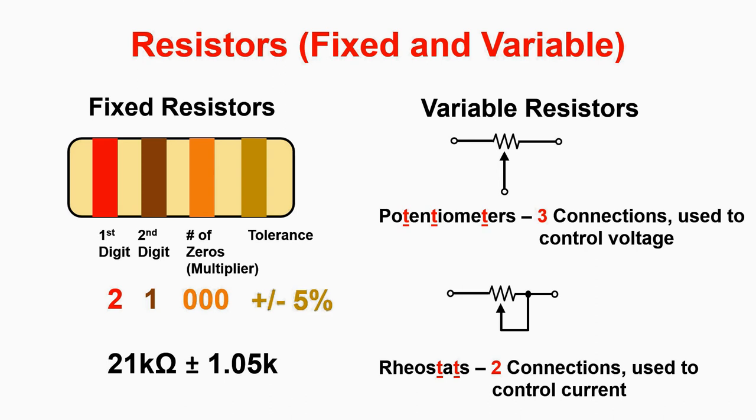We can calculate the tolerance range one of two ways. Use what works best for you. For the first method, we can take 21k ohms times 5% or 0.05 and that gives us 1.05k ohms. Now we must add this value to find the high end of our range and then subtract the value to find the low end of our range. The second way is to multiply the value by 95% or 0.95 to find our low side tolerance and multiply by 105% or 1.05 to find our high side tolerance.